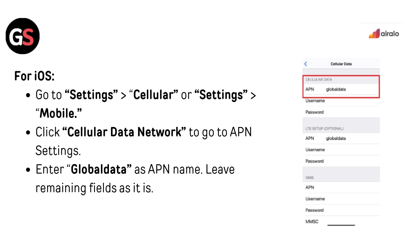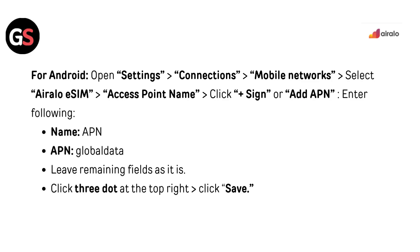For iOS, go to Settings then Cellular, or Settings then Mobile. Click 'Cellular Data Network' to go to APN settings. Enter 'globaldata' as the APN name and leave the remaining fields as they are. For Android, open Settings and go to Connections or Mobile Networks. Select Airalo eSIM Access Point Name. Click the plus sign or 'Add APN'. Enter Name: APN, APN: globaldata. Leave remaining fields as they are. Click the three-dot menu at top right and then click Save.